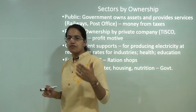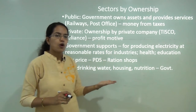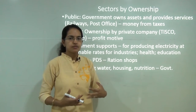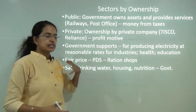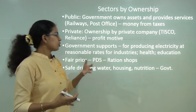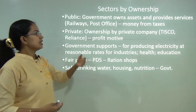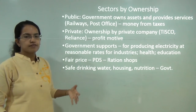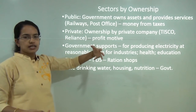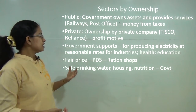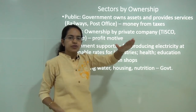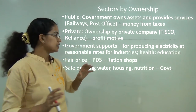The final classification of sectors is based on ownership. Based on ownership, there can be either public sector activities or private sector activities. Private sector activities are controlled by private companies like Tata, Reliance, etc. When it comes to public sector companies, they are under government influence — companies like SAIL (Steel Authority of India), post offices, and railways are part of the public system. The money for the public sector is generated through taxes, and the government uses that same money for the overall development of the nation.